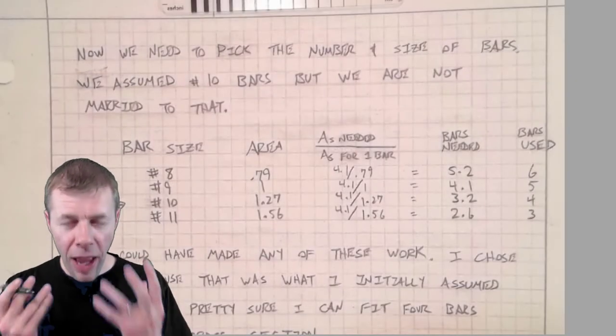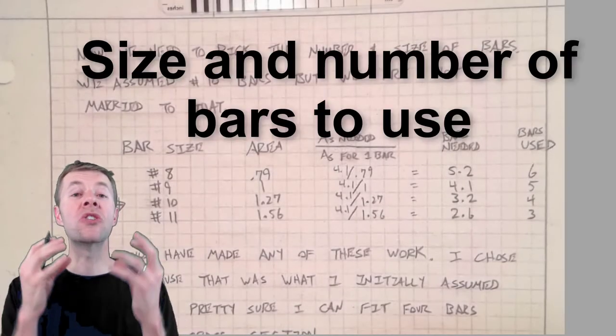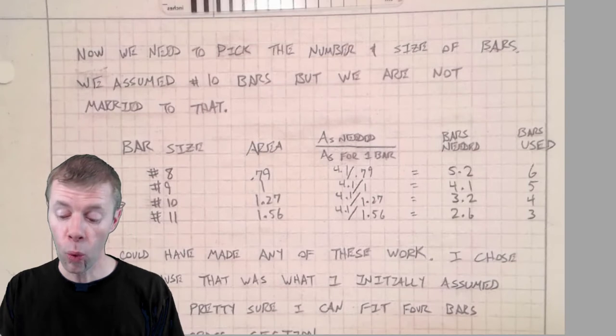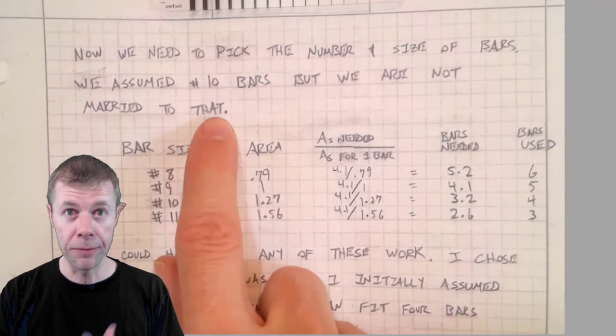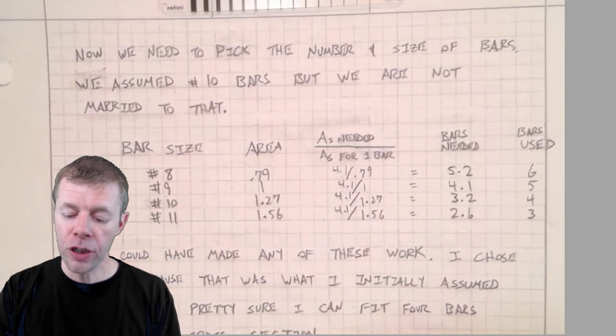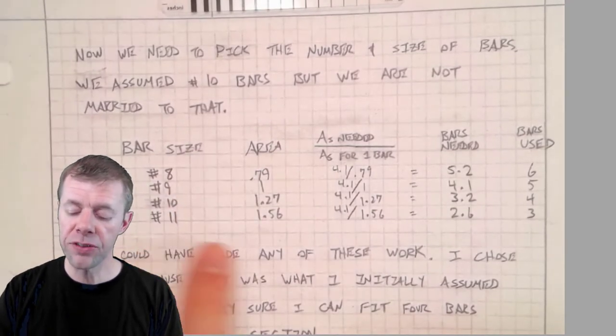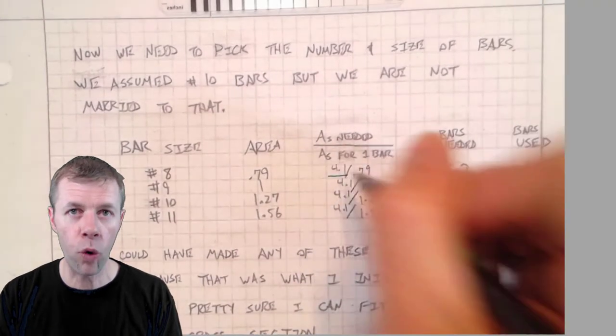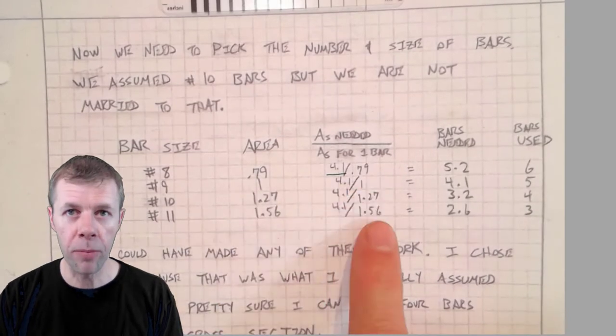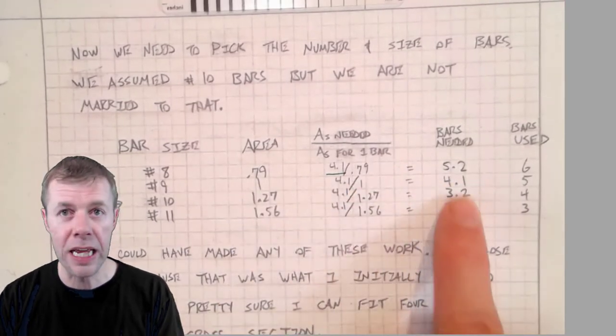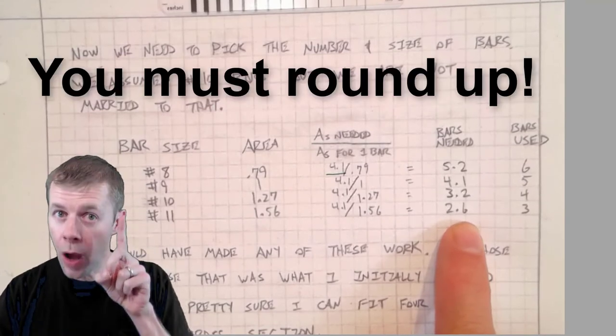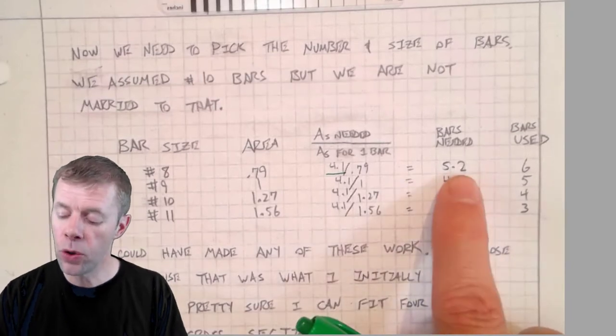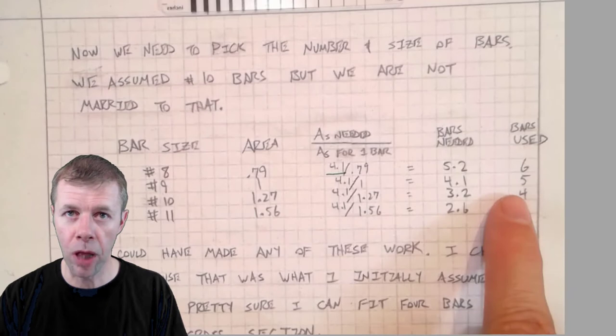Now that we have the amount of steel, we just need to figure out what size and how many bars to make our beam work. We assumed a number 10 bar but we're not married to that. I'm going to try all kinds of different sizes. I take the area I need, 4.1, and divide it by the area of each bar. I must round up, I must provide more bars than I need.